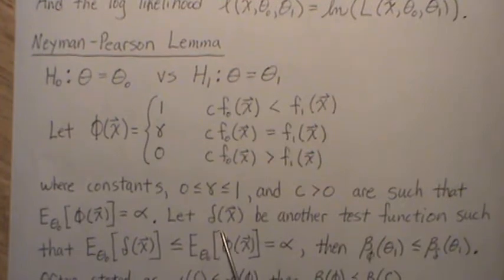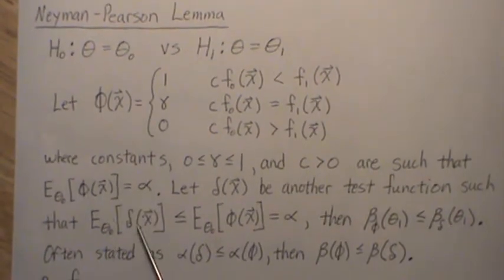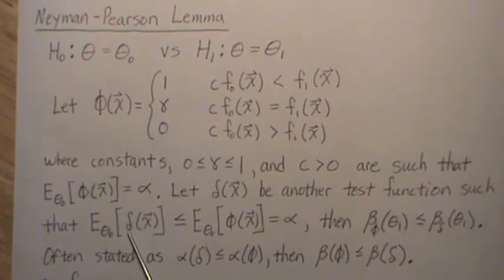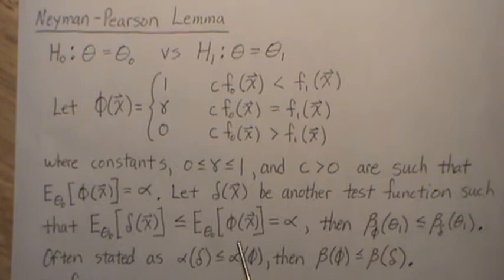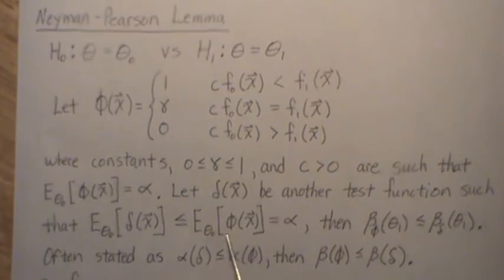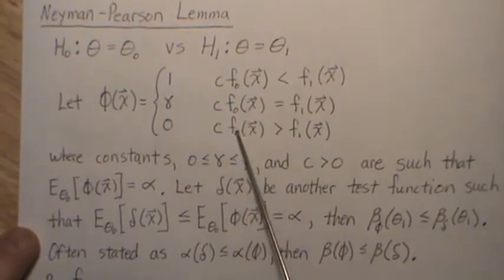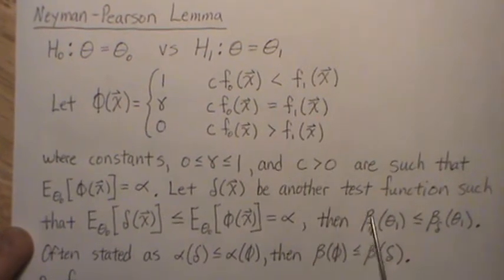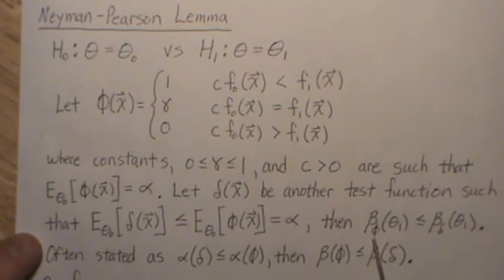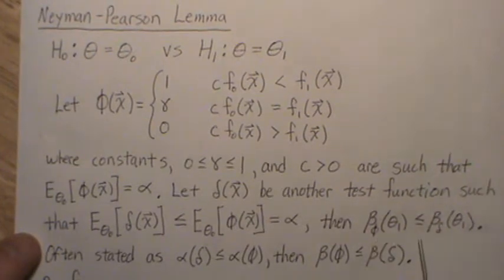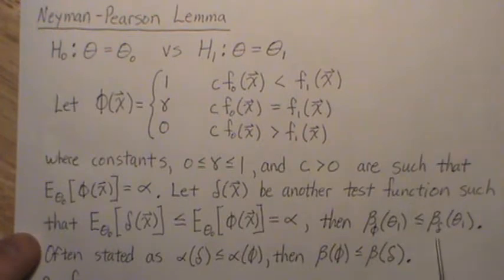So let delta be any other test function such that the size of the test function delta is less than or equal to the size of the test function phi. If this is the case and we define our test function in this way, then the probability of a type 2 error for phi is always less than or equal to the type 2 error probability associated with delta.